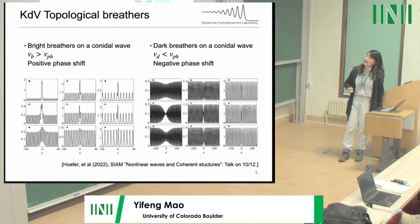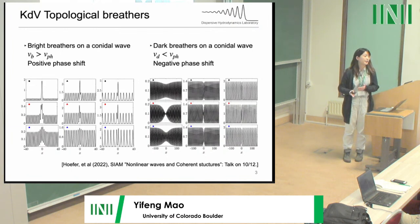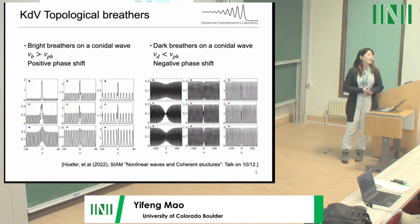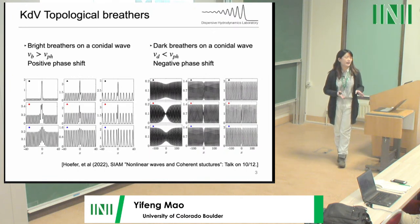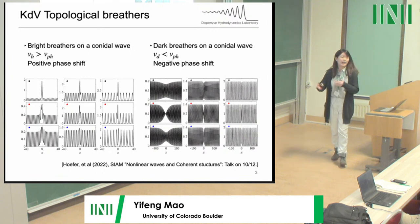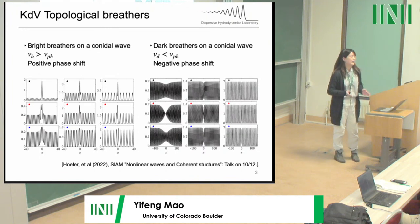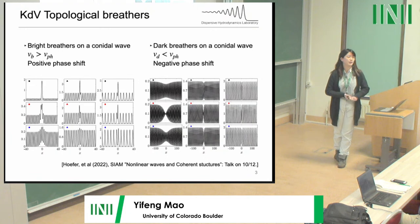The carrier wave background is subject to a positive phase shift, as given by the nonlinear dispersion relation. For the dark breathers, we have depression-type structures. The nonlinear dispersion relation suggests that the dark breather speed will be slower than the carrier wave speed, and the carrier background is subject to a negative phase shift. So it is the opposite of the bright topological breather.